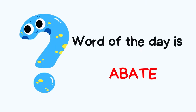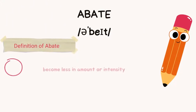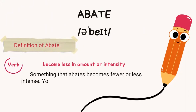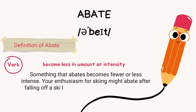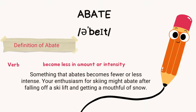Word of the day is: abate. Definition of abate — become less in amount or intensity. Something that abates becomes fewer or less intense. Your enthusiasm for skiing might abate after falling off a ski lift and getting a mouthful of snow.